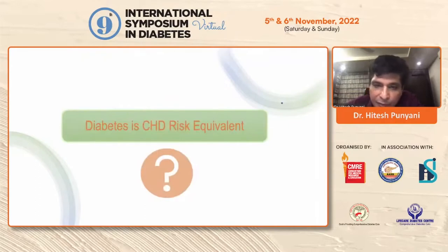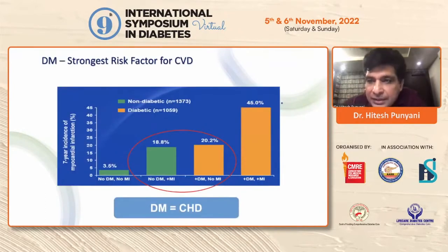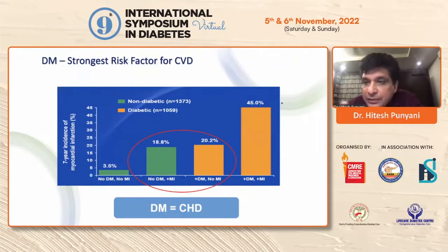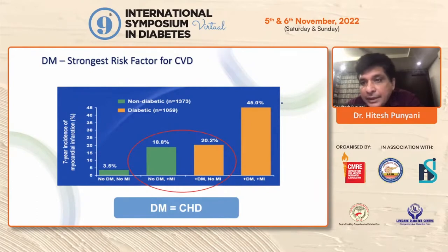When we were graduating from medical college, a very common term was that diabetes was put as a CHD risk equivalent. If we categorize patients — those with no diabetes but a cardiovascular event, versus those with diabetes but no cardiovascular event — the patients who had one episode of myocardial infarction without diabetes had almost similar incidence of a second MI as patients who had diabetes but no previous history of ASCVD.